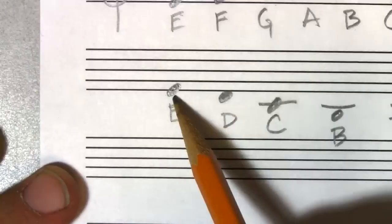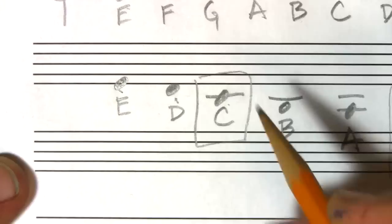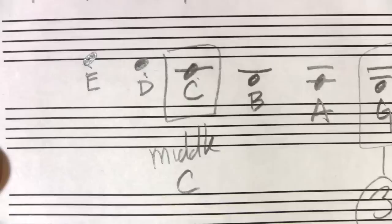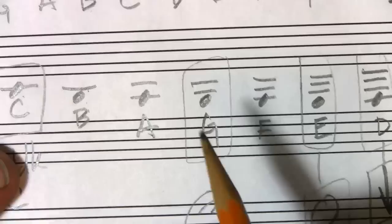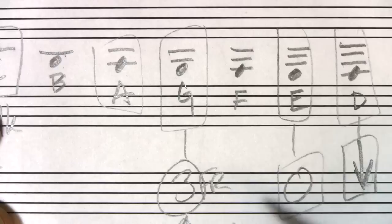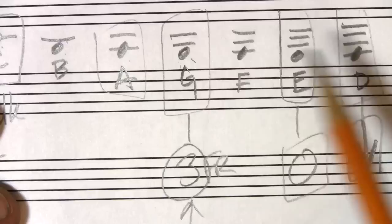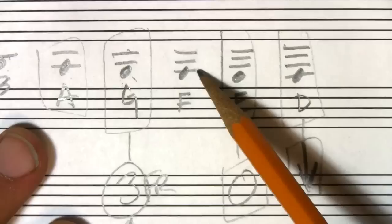Below the staff, we've got E at the bottom. One space below the staff is D. One line below the staff is C — and that is called middle C. One space below that C is the note B.